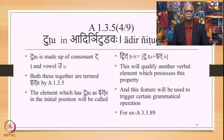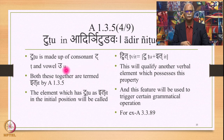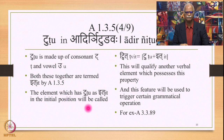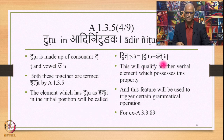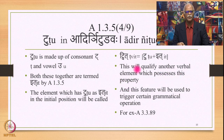Let us look at tu as ith. Tu is also a cluster — it is made up of consonant t and vowel u. Both these together are termed ith by 1.3.5. The element which has tu as ith in the initial position will be called twit. An element which has tu as ith is called twit, and this will qualify another verbal element which possesses this property. A verbal root dhatu will be called twit dhatuhu, and this feature will be used to trigger certain grammatical operations.